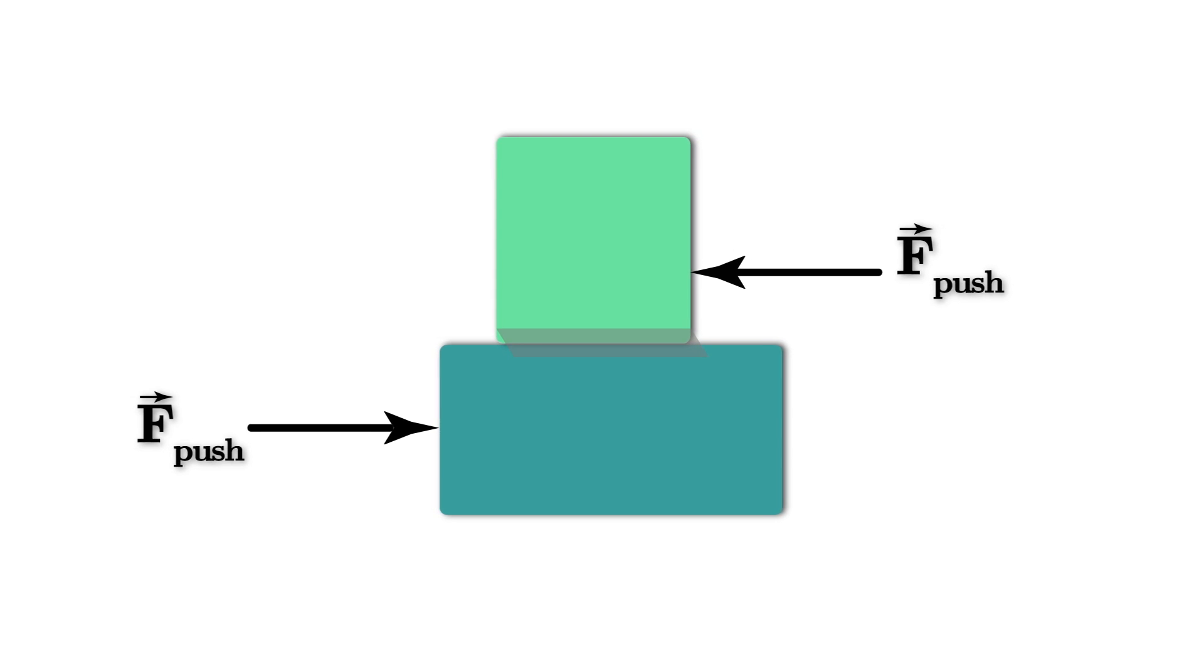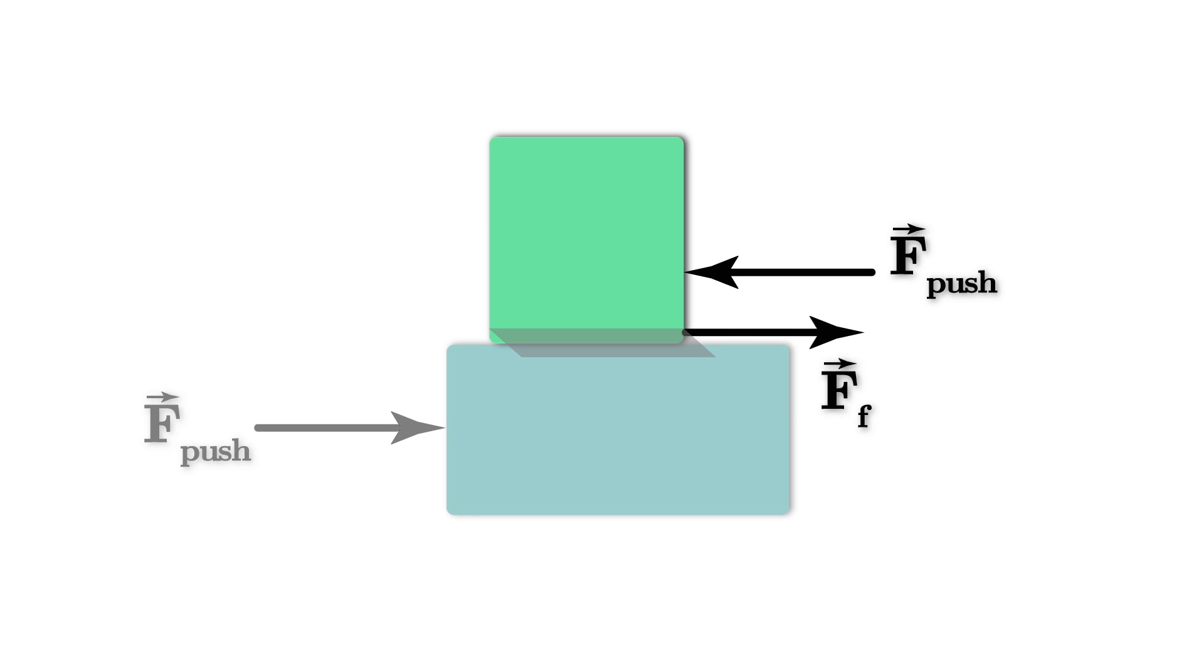What if we now push these blocks horizontally in opposite directions? At their interface, there is a frictional interaction. This interaction gives rise to a pair of frictional forces that are parallel to the interface. The friction force on the top block from the bottom block is opposite in direction but equal in magnitude to the friction from the bottom block due to the top block.